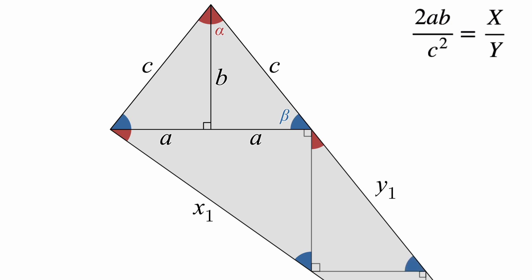Now, notice that the shorter leg of the first triangle is the same line as the longer leg of the second triangle, which means that the ratio between the dimensions of these two triangles is a over b. So, the hypotenuse of the second triangle, y1, is a over b times the hypotenuse of the first triangle, x1.